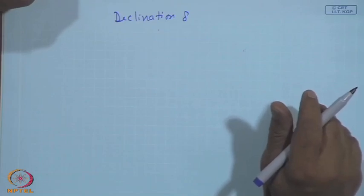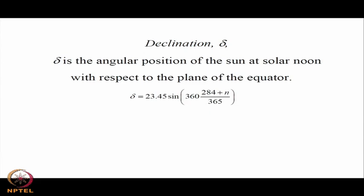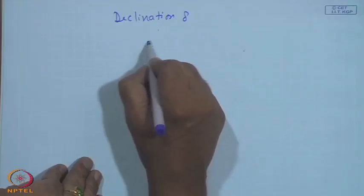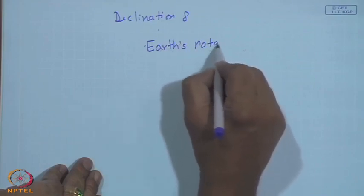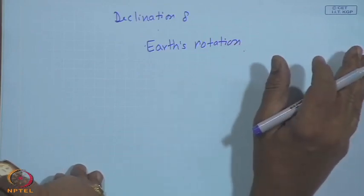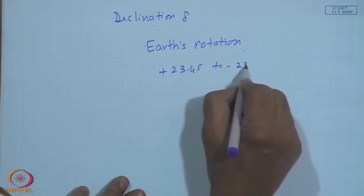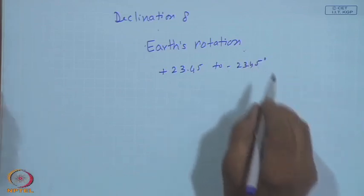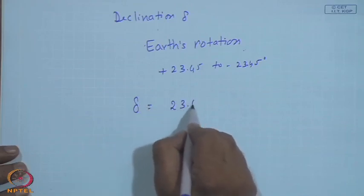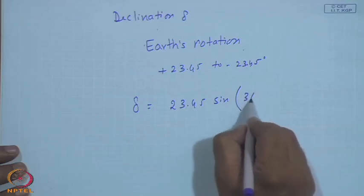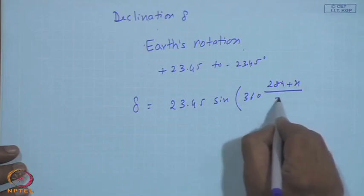Declination delta is the angular position of the sun at solar noon with respect to the plane of the equator. The plane of Earth's rotation and the equatorial plane are not the same; the axis is tilted, varying from +23.45 to −23.45 degrees as the Earth moves in its elliptic path. Each day you can calculate declination according to: delta = 23.45 × sin(360 × (284 + N) / 365).